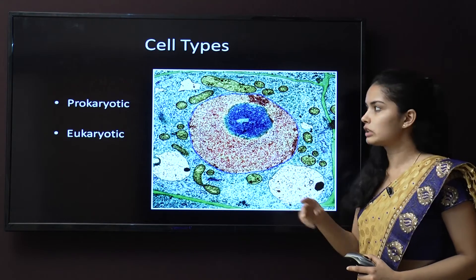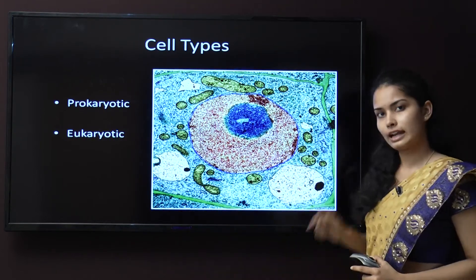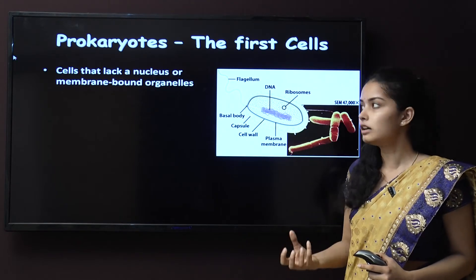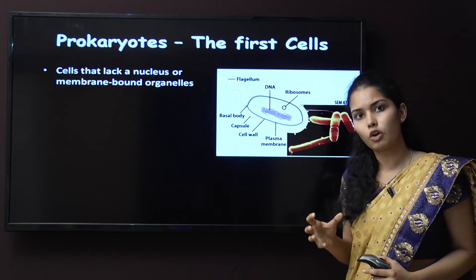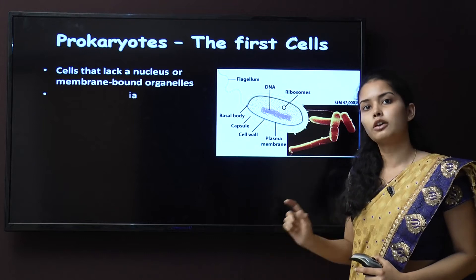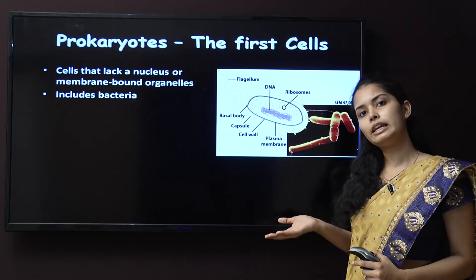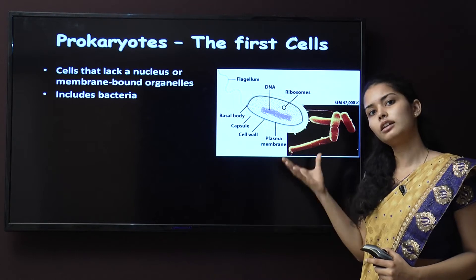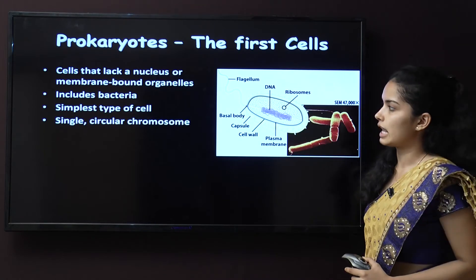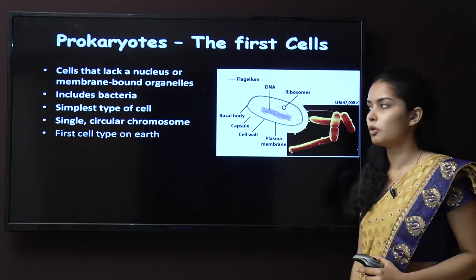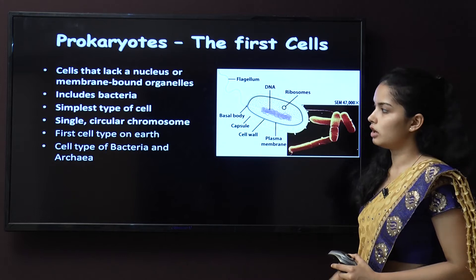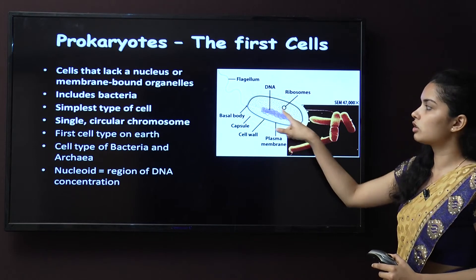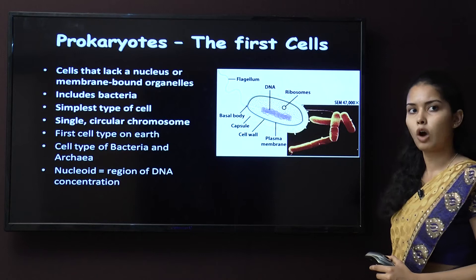Cells are mainly of two types: prokaryotic and eukaryotic. Prokaryotic cells are the first cells delivered on earth — cells that lack a nucleus or membrane-bound organelles. They include mainly bacteria. It is the simplest type of cell, with a single circular chromosome and a nucleoid region, which is not a true nucleus but just a coiled structure of DNA. Cell types of bacteria and archaea are of this type.